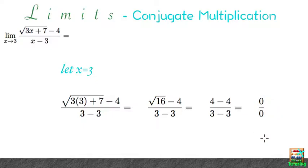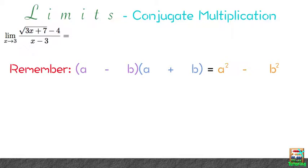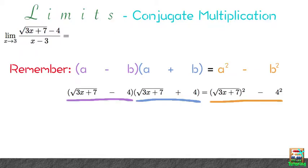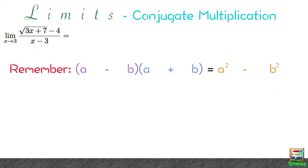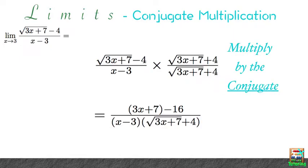Notice that square root of 3x plus 7 minus 4 looks an awful lot like a minus b. So multiplying by its conjugate, square root of 3x plus 7 plus 4 will get rid of the square root. Let's start the problem together. Multiply the top and bottom by the conjugate. You'll see that we get 3x plus 7 minus 16 in the numerator.